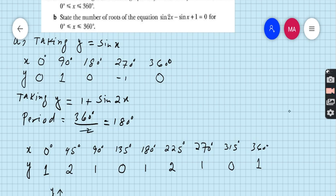We will take a gap of 45 degrees because when we put 45 instead of x, 2 times 45 gives 90 and sin 90 is 1.